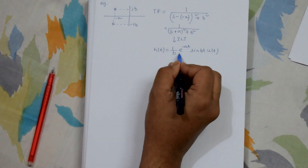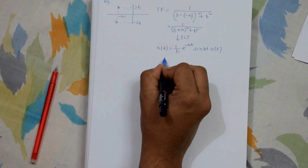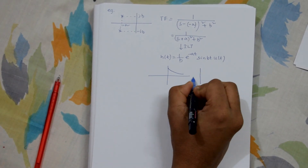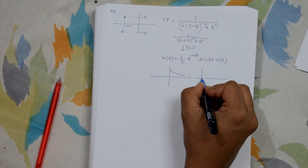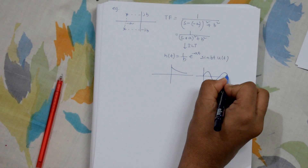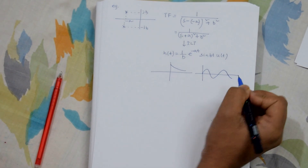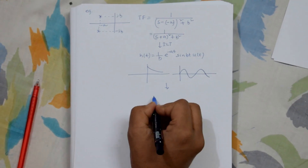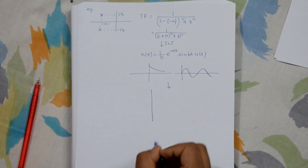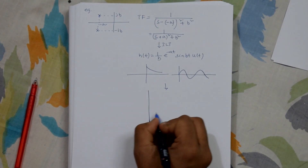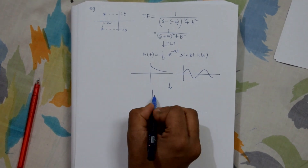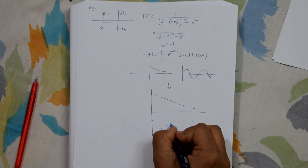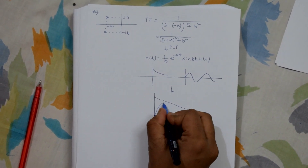We know that e^(−at) · u(t) is an exponentially decreasing curve, and the sin curve oscillates. Combining these two we get a damped sinusoidal curve, which is a stable one.